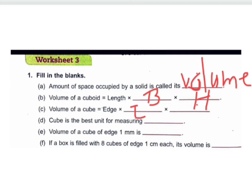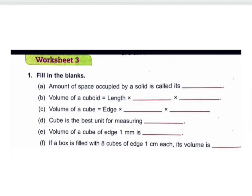Volume of a cube is edge multiplied by edge multiplied by edge. A cube is the best unit for measuring volume. A cube of edge 1 millimeter has a volume of 1 cubic millimeter. If a box is filled with 8 cubes of edge 1 centimeter each, its volume is — the edge is 1 centimeter and there are 8 cubes total.